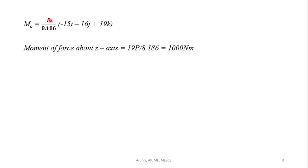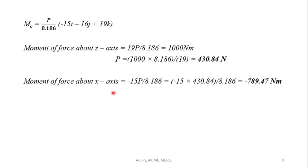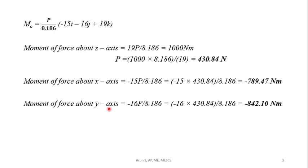Using the z-component, Mz = (P/8.186) × 19 = 1000 Nm, we can find the value of P. Once P is found, the moment about the x-axis is Mx = -15P/8.186, giving approximately -879.4 Nm. Similarly, the moment about the y-axis is My = -16P/8.186, giving approximately -842.1 Nm.